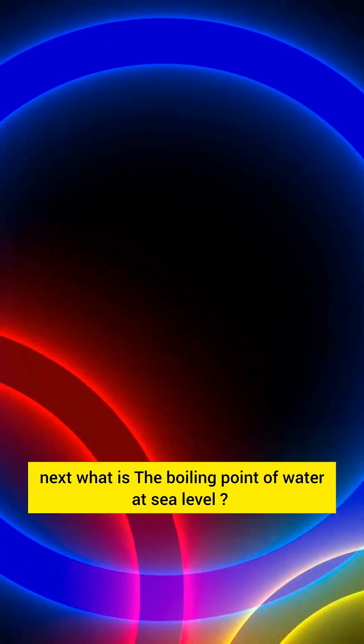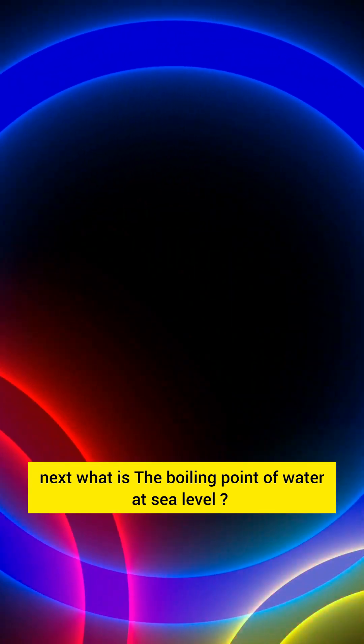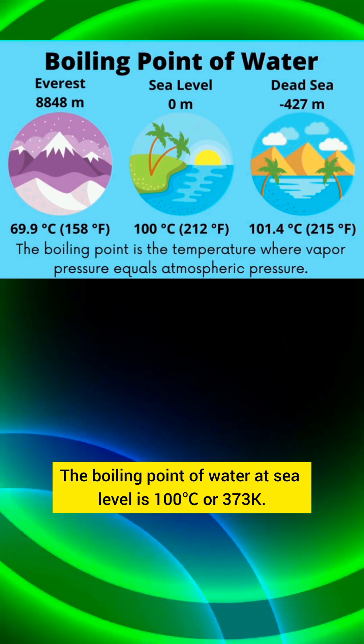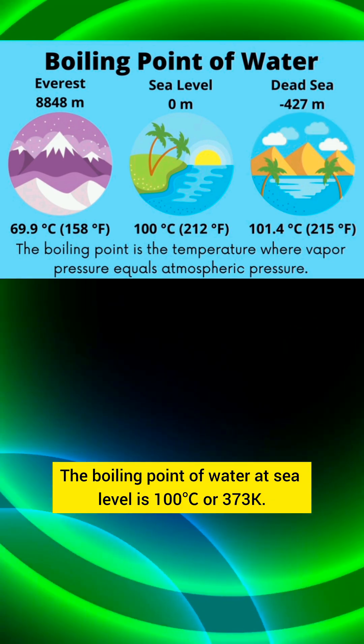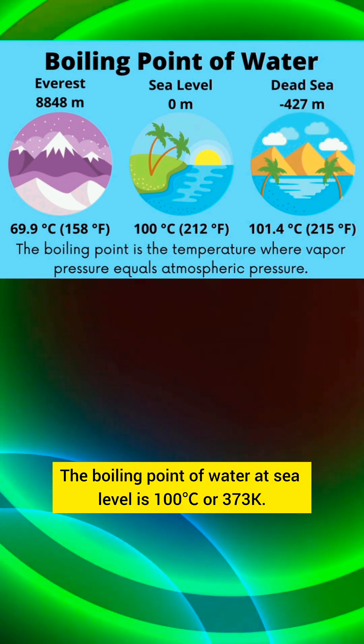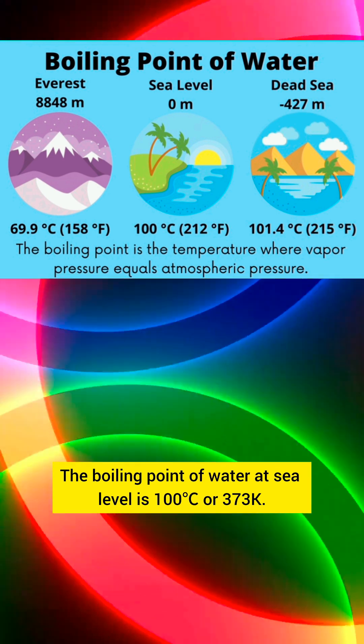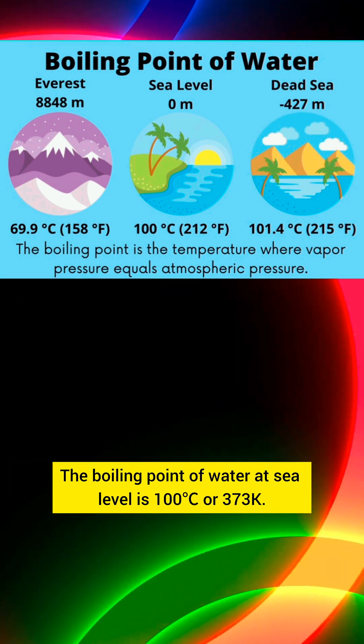What is the boiling point of water at sea level? The boiling point of water at sea level is 100 degrees Celsius or 373K.